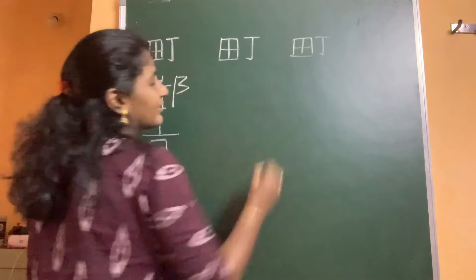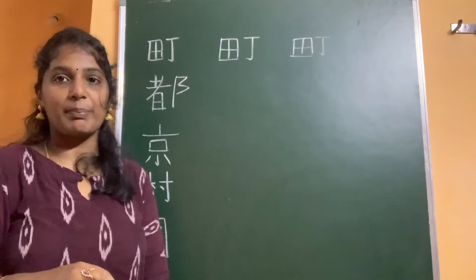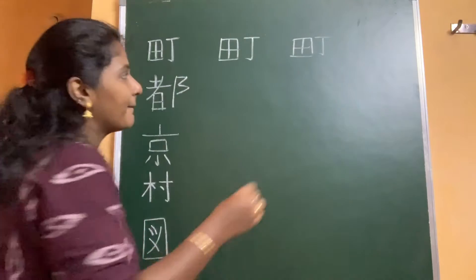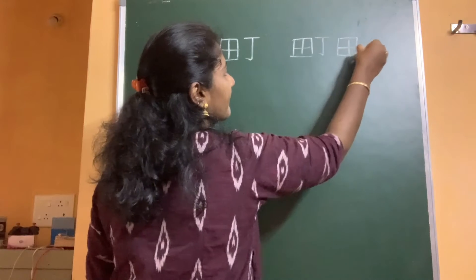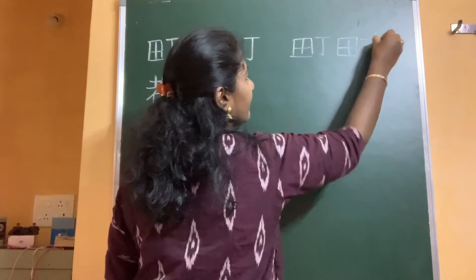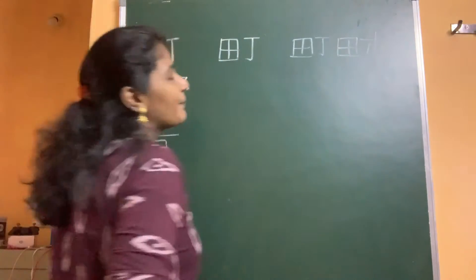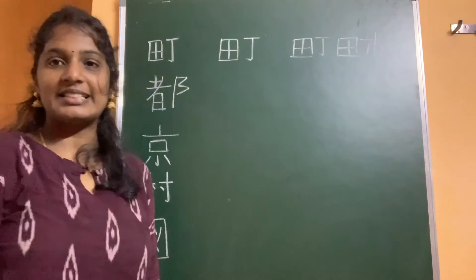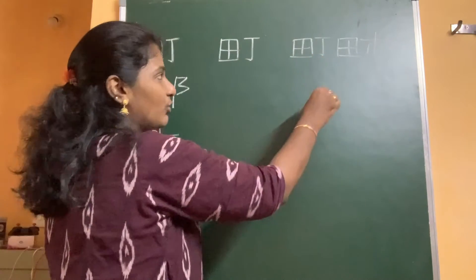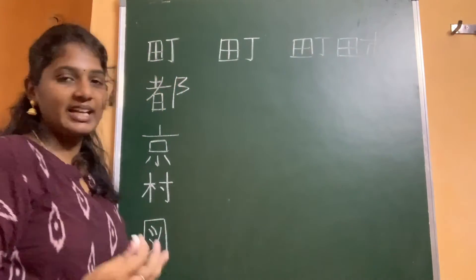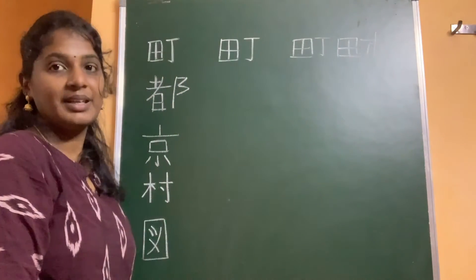So this is the kanji that means Machi. We have a city in Japan called Machida. Machi means town, the rice paddy fields, and shi which means city — Machida.